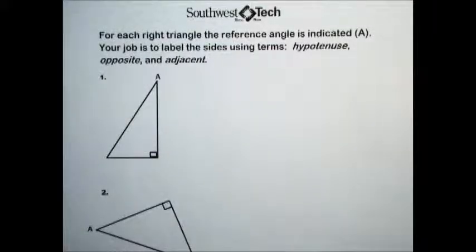Practice set two. For each right triangle, the reference angle is indicated A. Your job is to label the sides using terms hypotenuse, opposite, and adjacent.